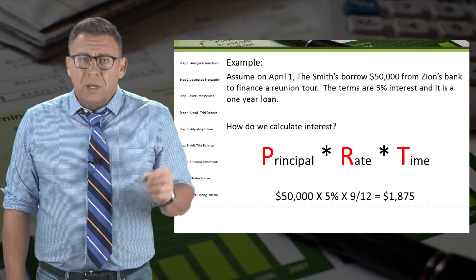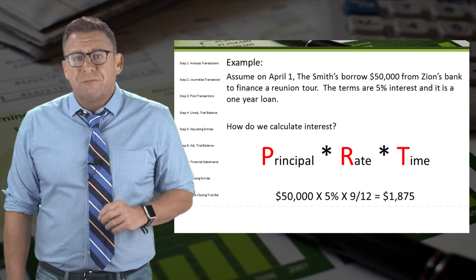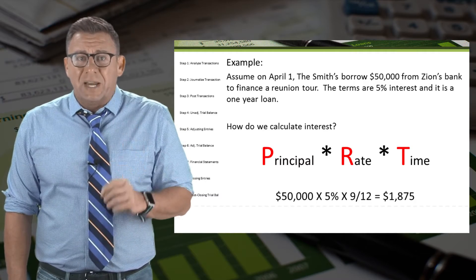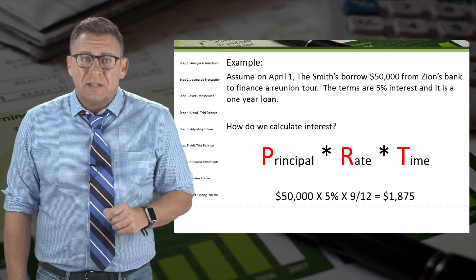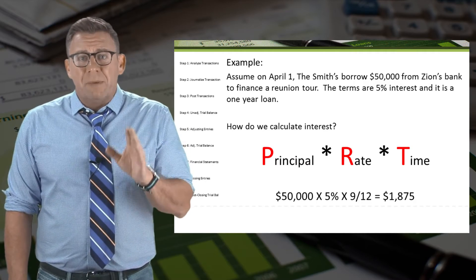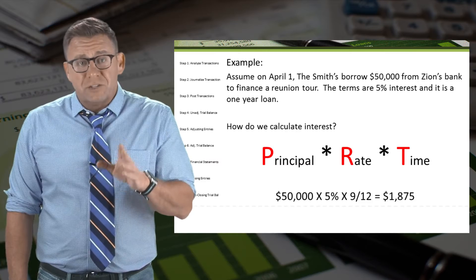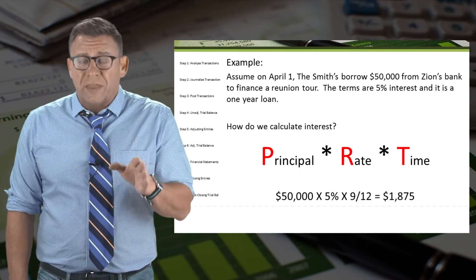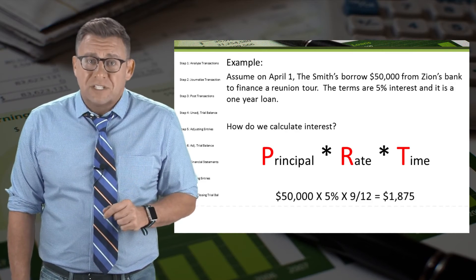April 1 to December 31 is 9 months. Thus, the amount of interest expense to accrue is $1,875.